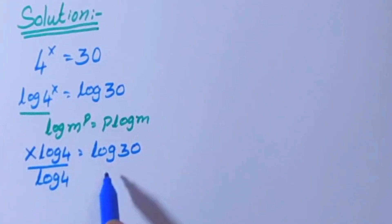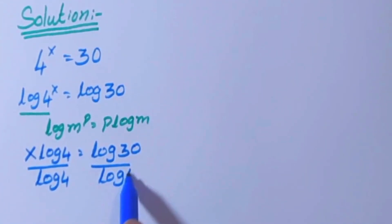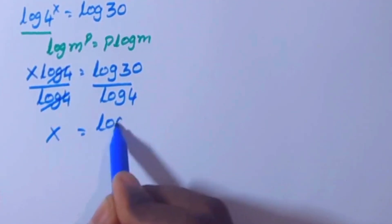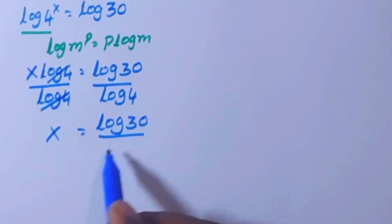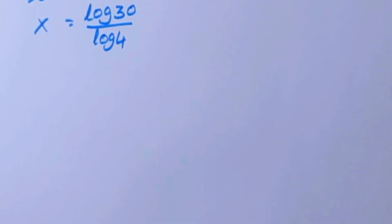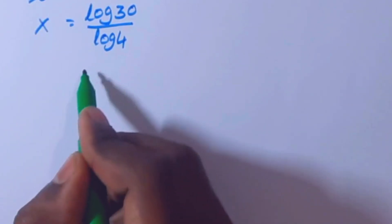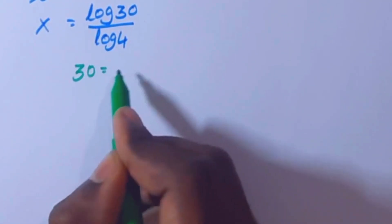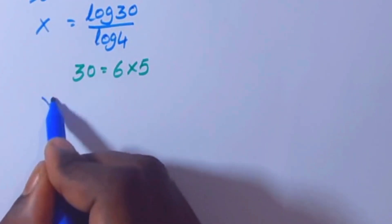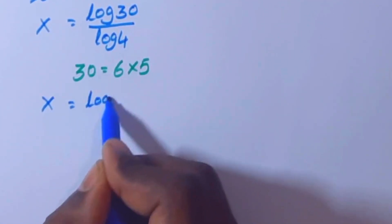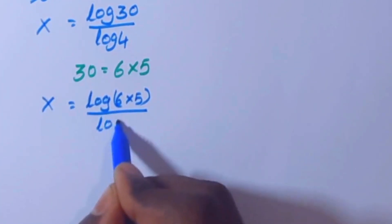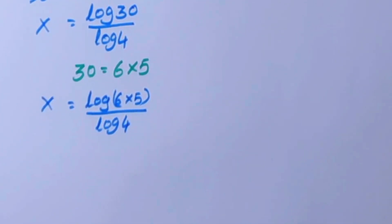We have log 4 on both sides. This log 4 cancels, giving x equals log 30 divided by log 4. Now 30 can be written as 6 times 5, so x equals log(6 × 5) divided by log 4.